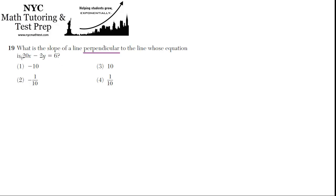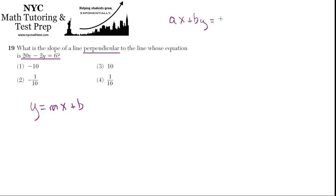The problem is, the line they gave us is not in y equals mx plus b form — slope-intercept form. Normally, if we have y equals mx plus b, then the slope is just the coefficient of x. But if it's not in this form, if it's in standard form — ax plus by equals c — then we can't do that. We have to get y by itself first before we can identify the slope.